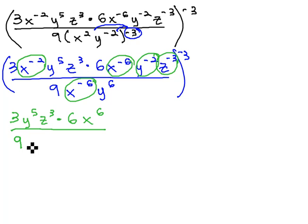In the denominator, we had a 9 and a y to the 6th, and then we moved down an x squared, an x to the 6th, a y squared, and a z cubed. All of this is still to the negative 3 power.